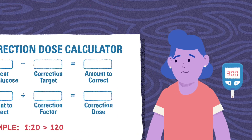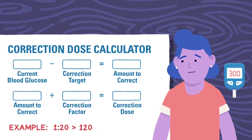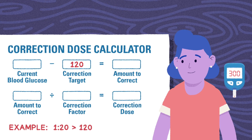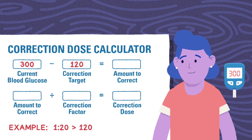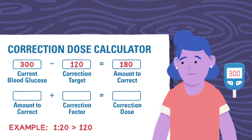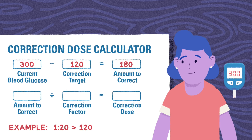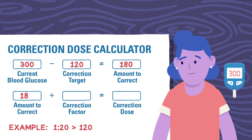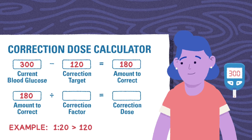To do this, they will subtract their correction target, 120, from the current blood glucose of 300. 300 minus 120 equals 180 — this is the amount the child needs to correct. Next, we will divide the amount to correct by the child's correction factor, 20.